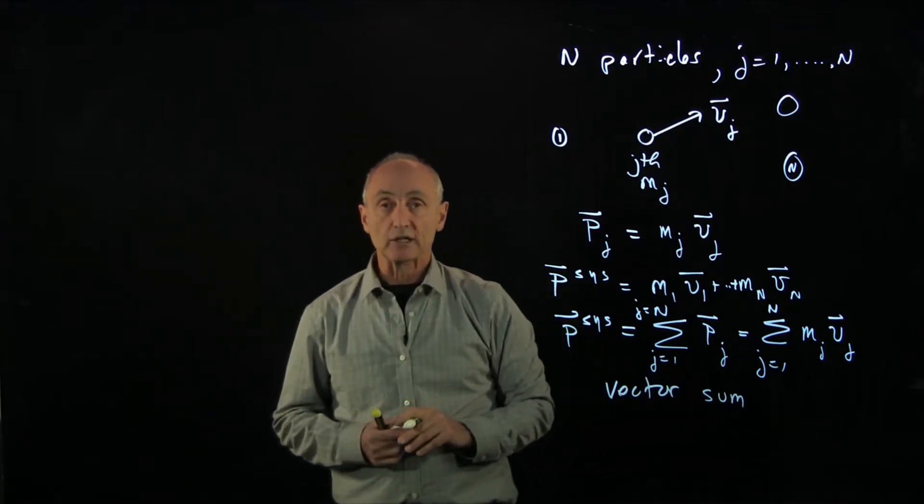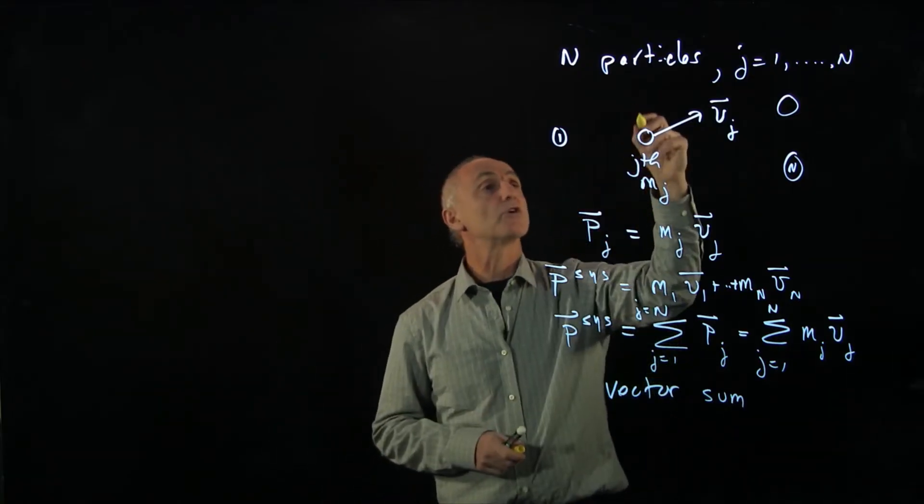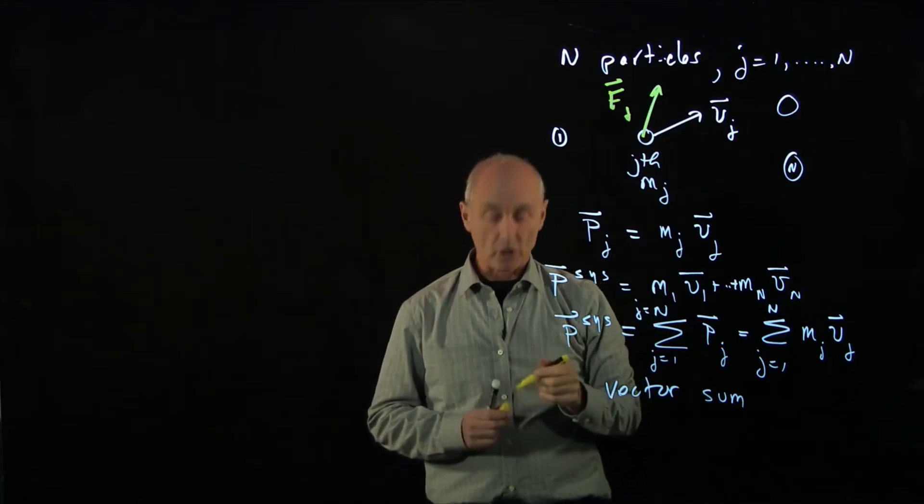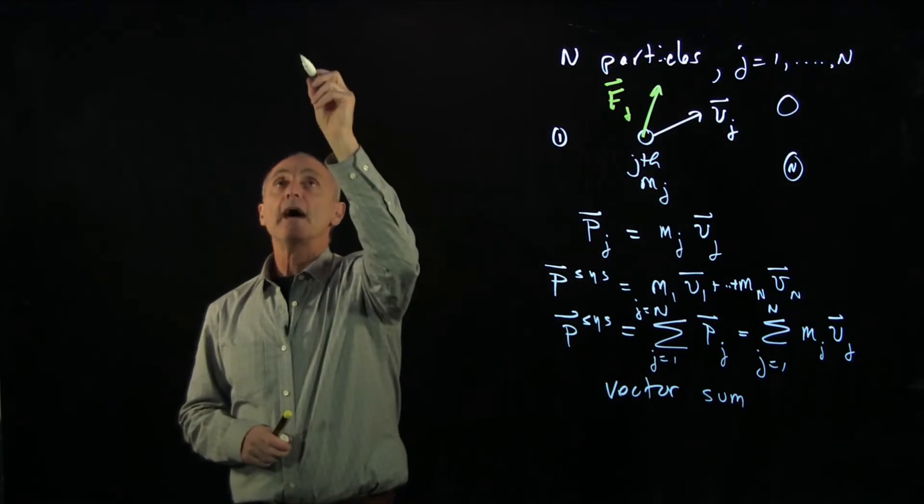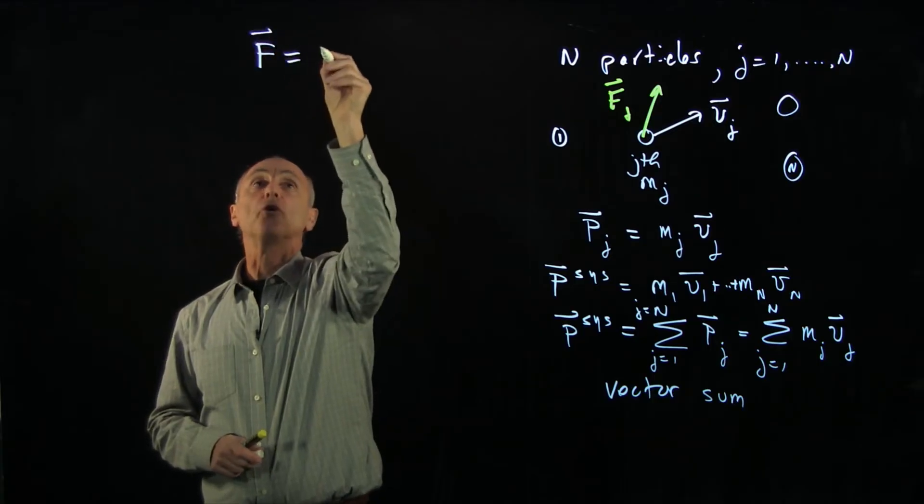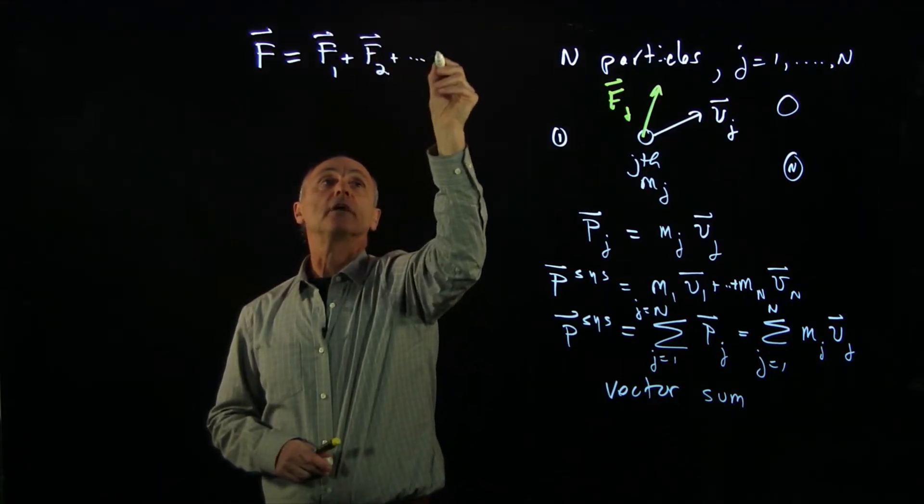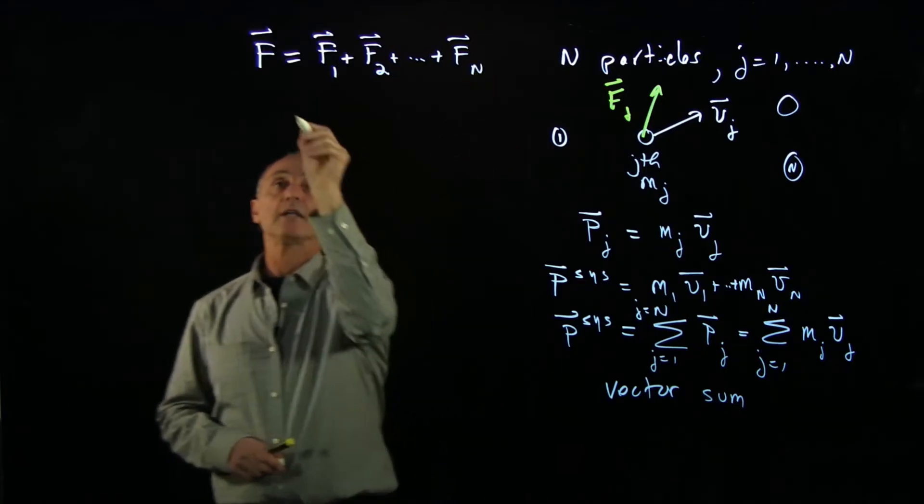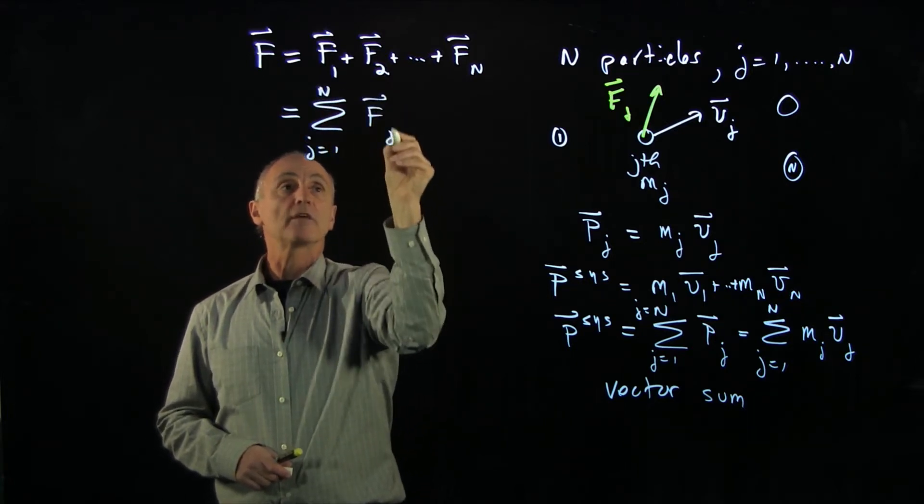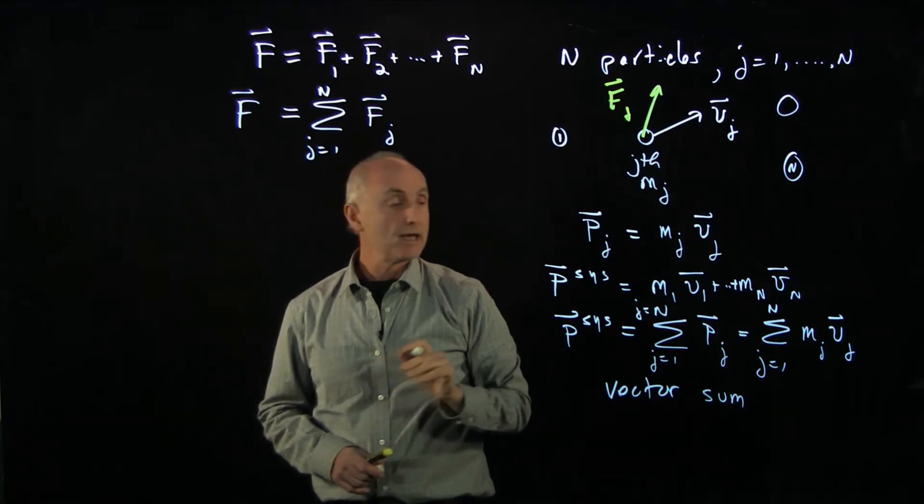And now, let's see how Newton's second law applies to the momentum of the system. So suppose that acting on our particles, for instance, here's our j-th particle. We have a force fj acting on the j-th particle. Then we know that from Newton's law that the force will be also the sum of the forces on all the particles, f1, f2, plus dot, dot, dot, plus fn. So once again, we can write this as a sum. j goes from 1 to N of the force on the j-th particle. And that's the force on the summing of all the forces on all the particles in the system.